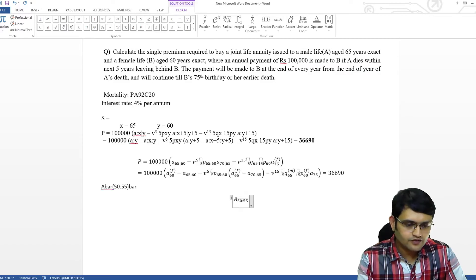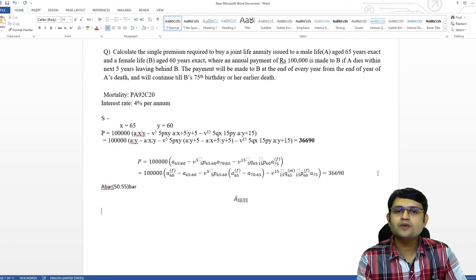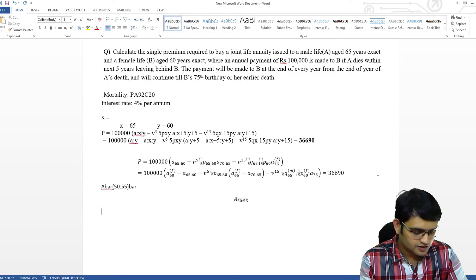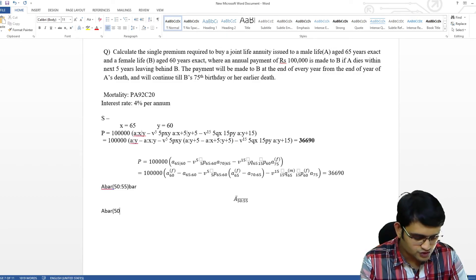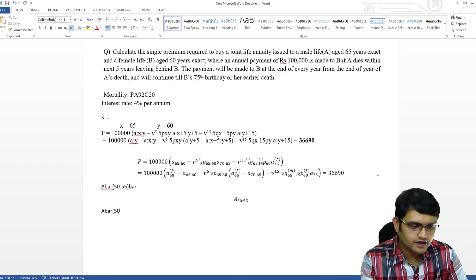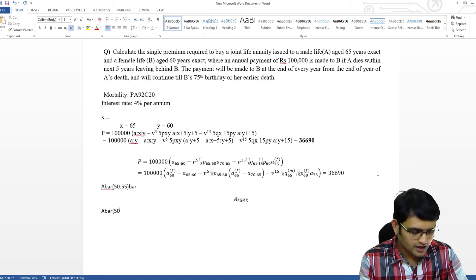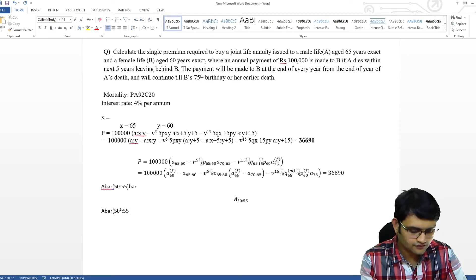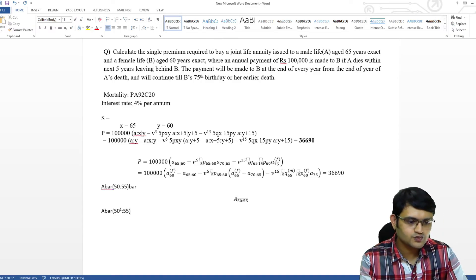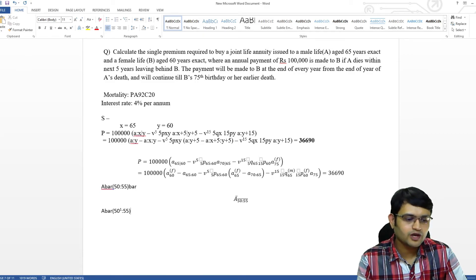Similarly, if I want to write payment on first death or payment on second death, I will choose something like A bar 50 and here I can use superscript shift control and equal to and then I can put one shift control equal to and again use 55. This is one way of writing it payment on first death